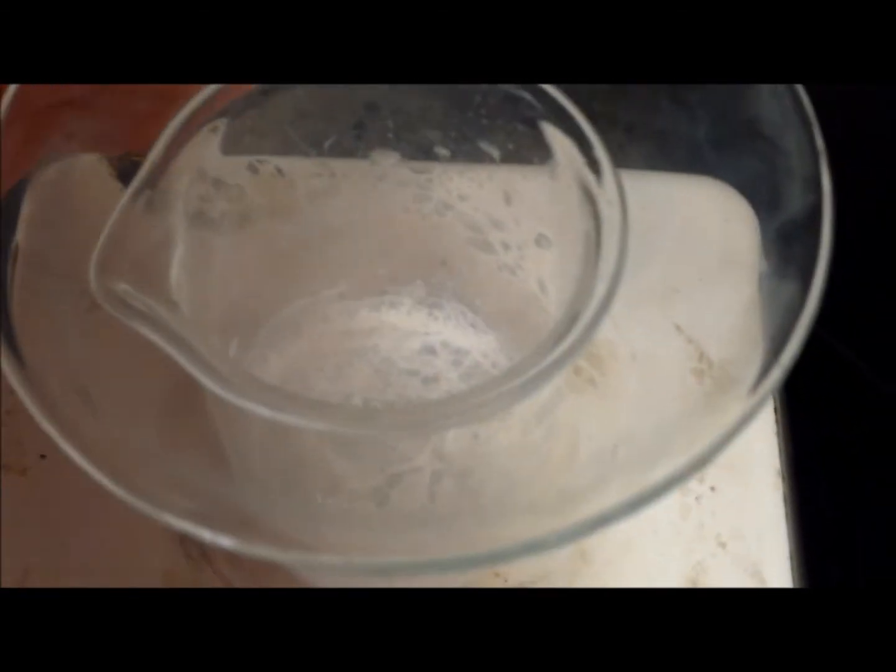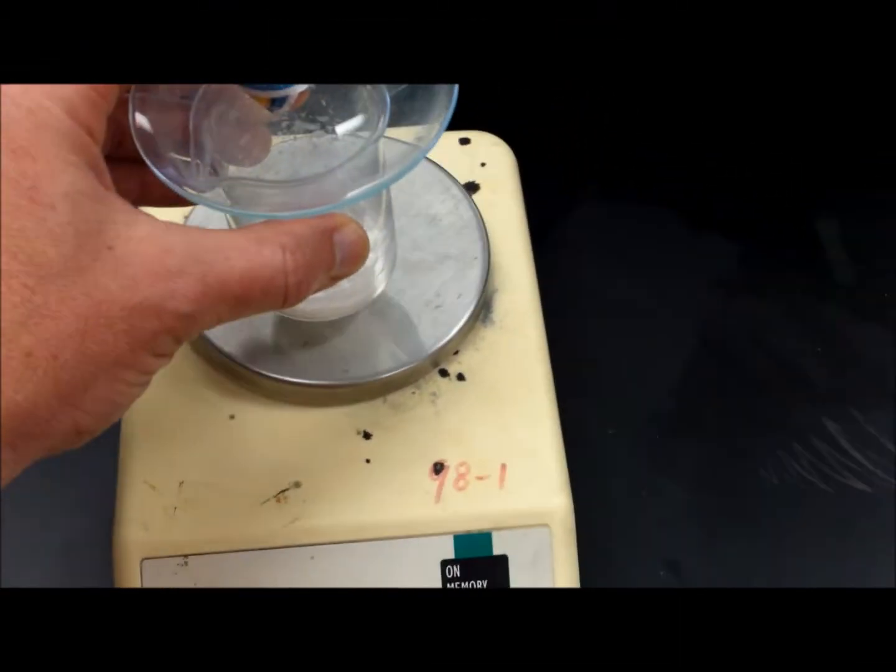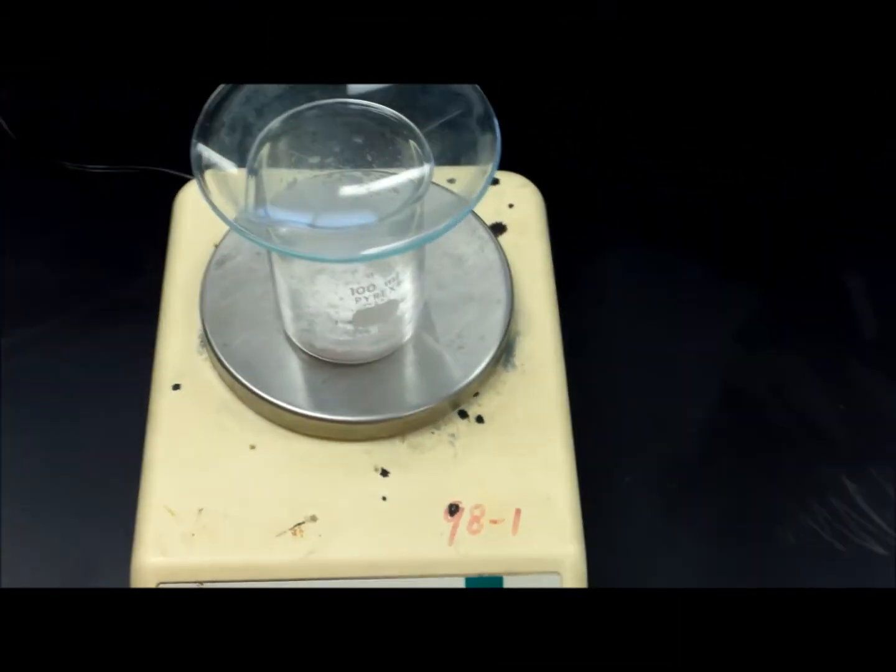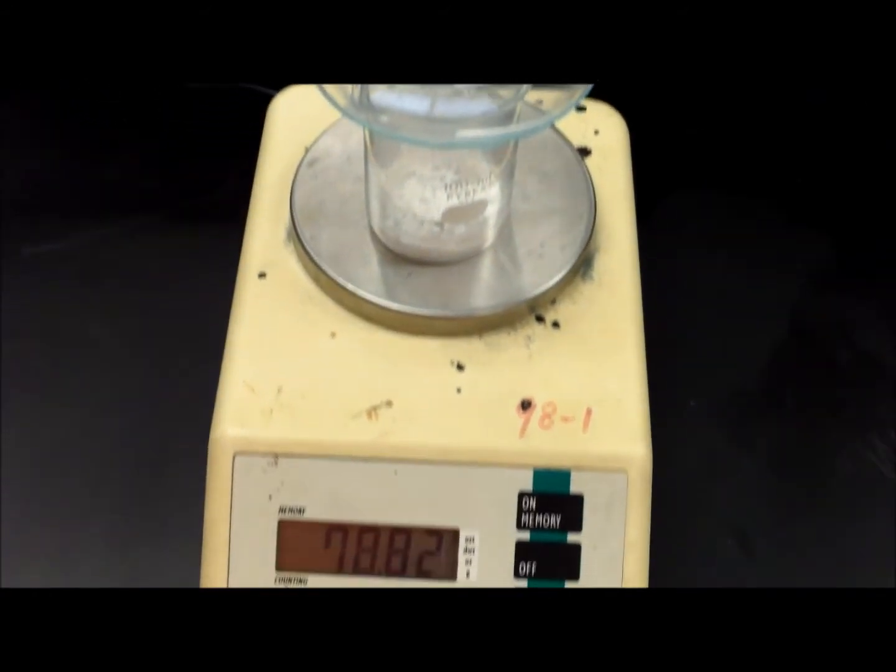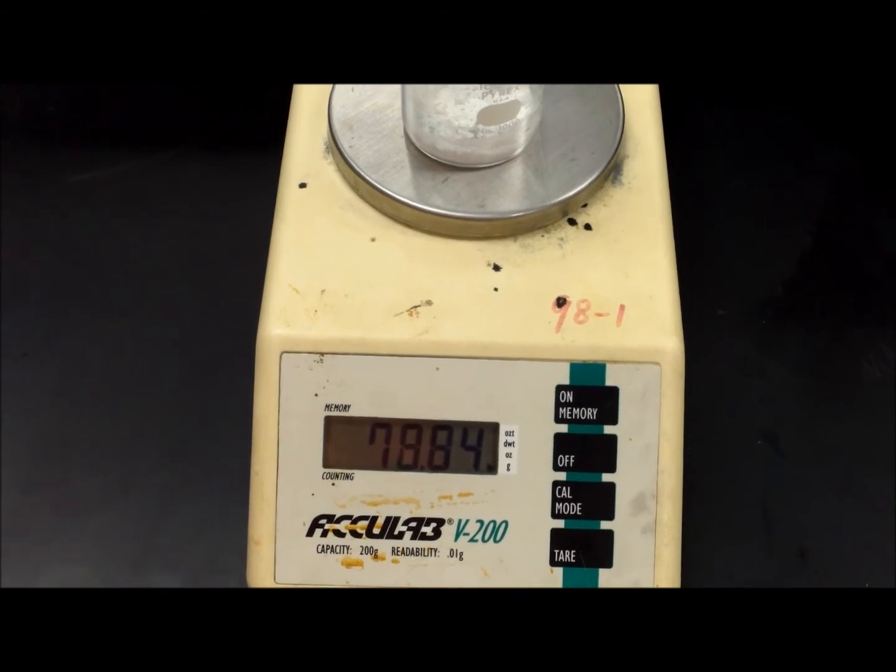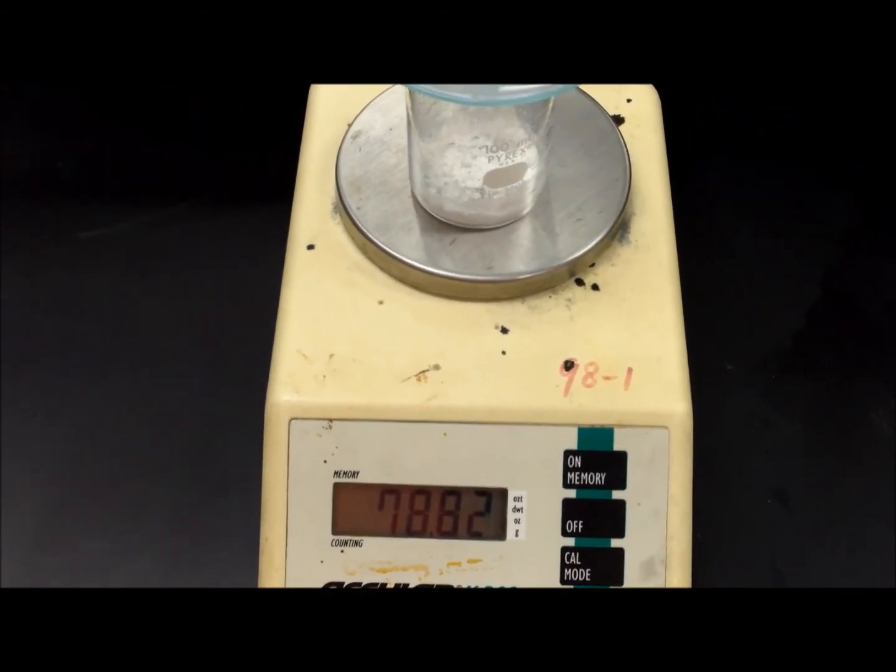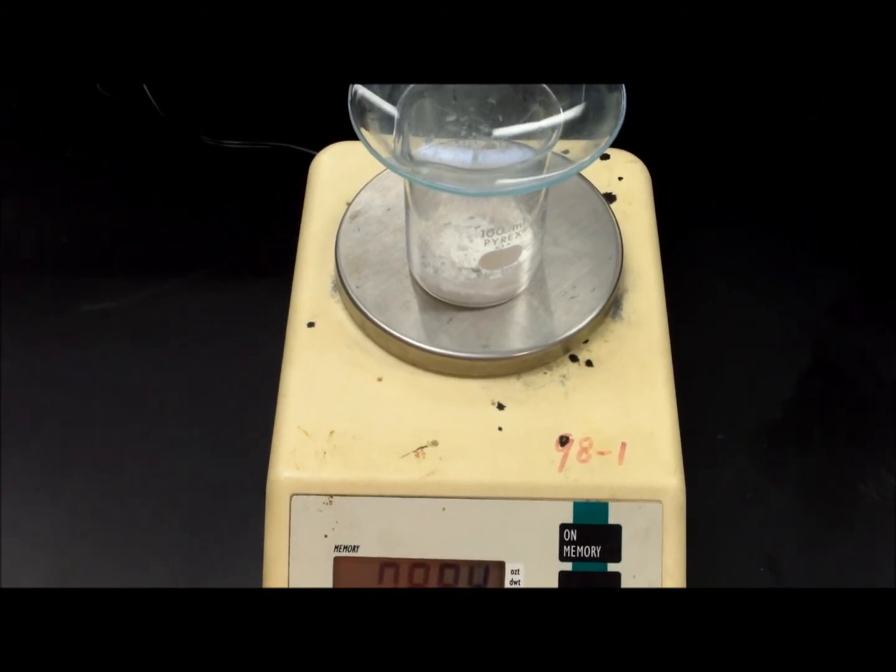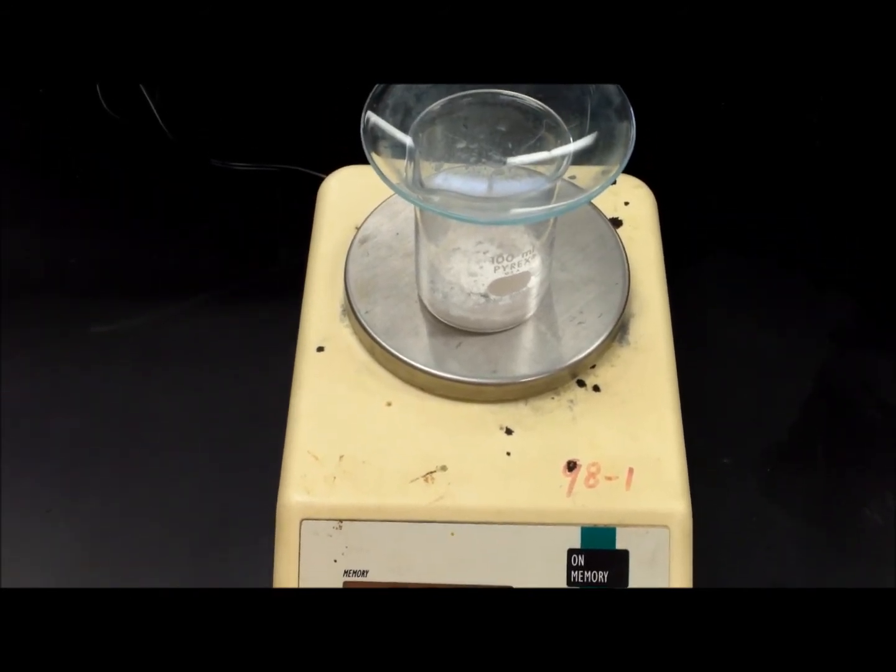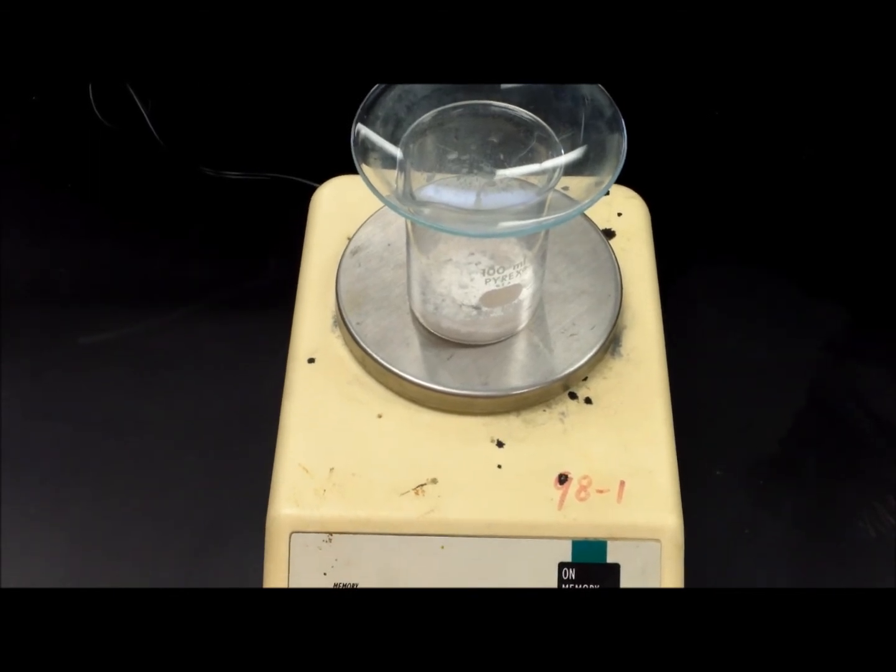Let's get a mass measurement of this sample. We will mass the sample together with the beaker and the watch glass. So we're getting a mass of 78.84 grams. Now we want to verify that this is a dry sample, so we're going to go ahead and heat the beaker for a little bit longer just to make sure that there's no additional water hiding out in the salt.